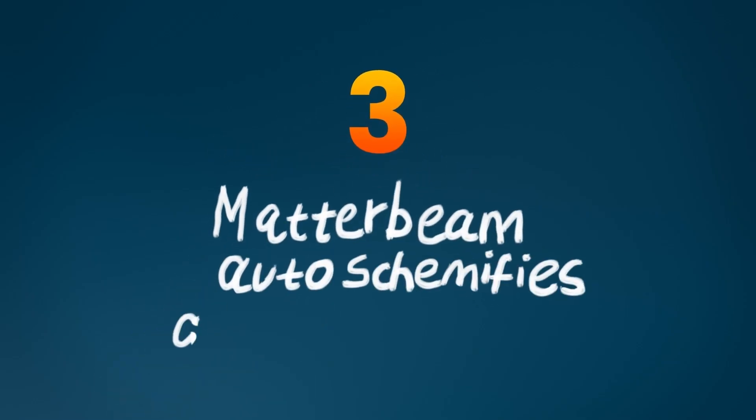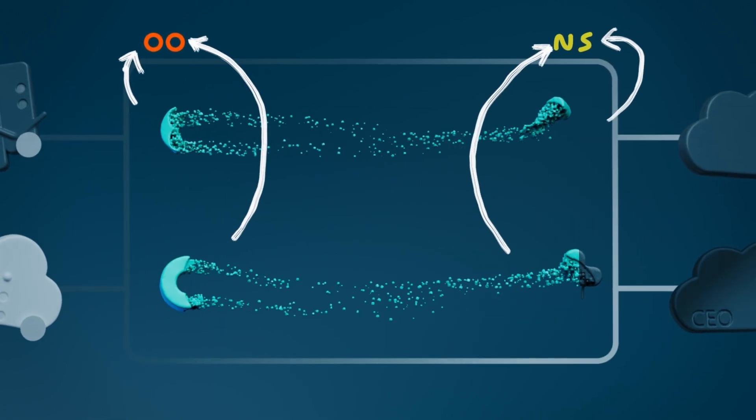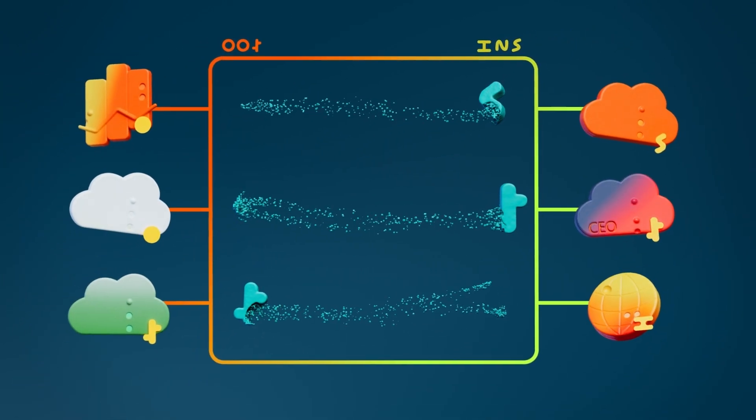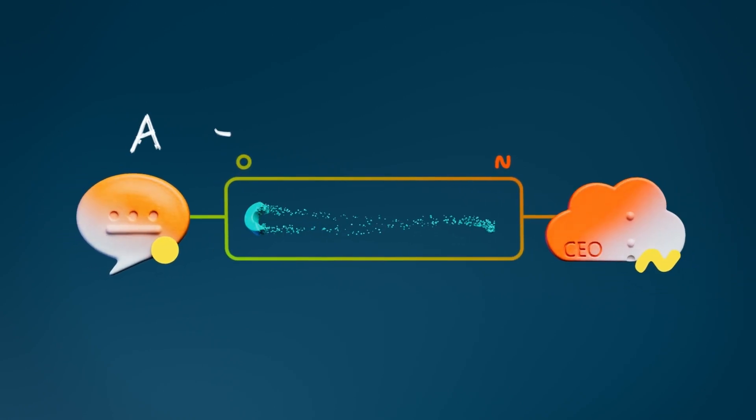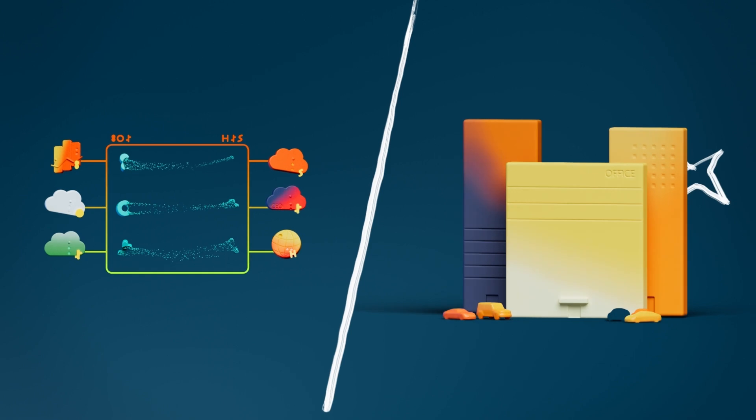Three. MatterBeam automatically figures out your data's shape on input and lets you use it however you want. You don't need a bespoke pipeline for every new use case, which means instead of spending your days shuttling data from A to B, you can spend them using that data to accelerate your business.